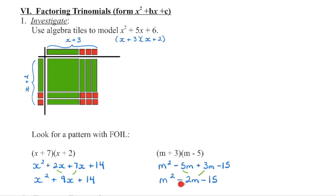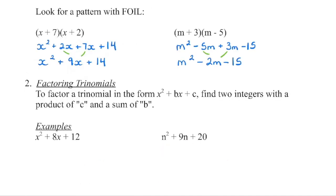So we have negative 2 as our b value, which comes from adding together negative 5 and positive 3 — that is the outside product plus the inside product. So to factor a trinomial, we need to find those two integers that have a product of c and a sum of b. So what two numbers will multiply together to get the c value and add to get the b value? In this case we have a b value of 8 and a c value of 12.